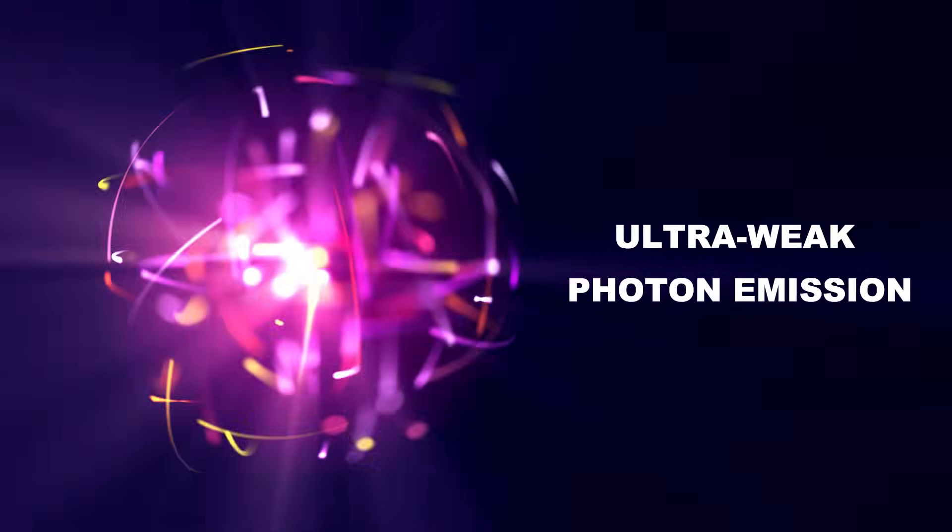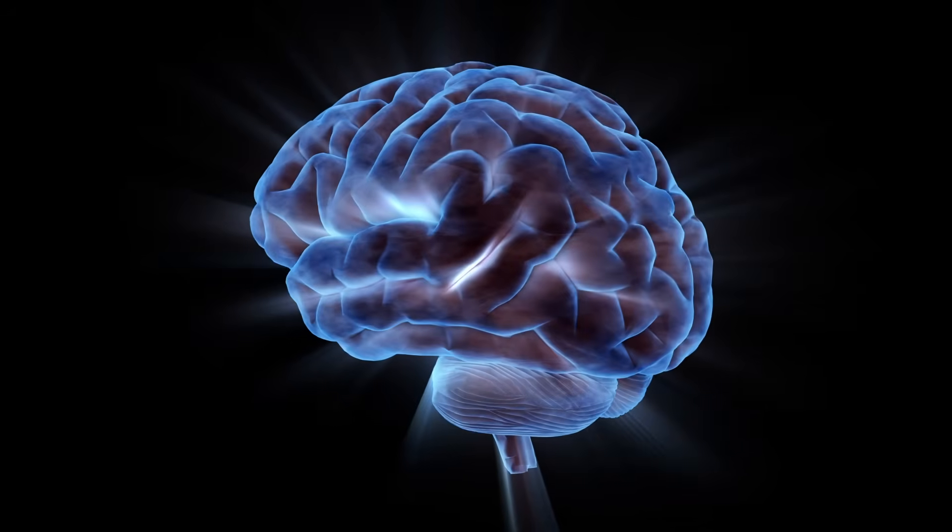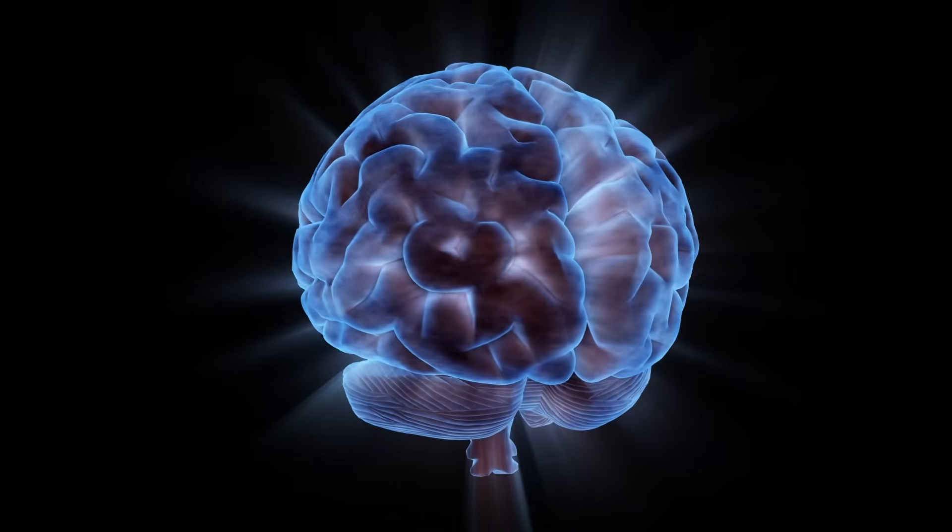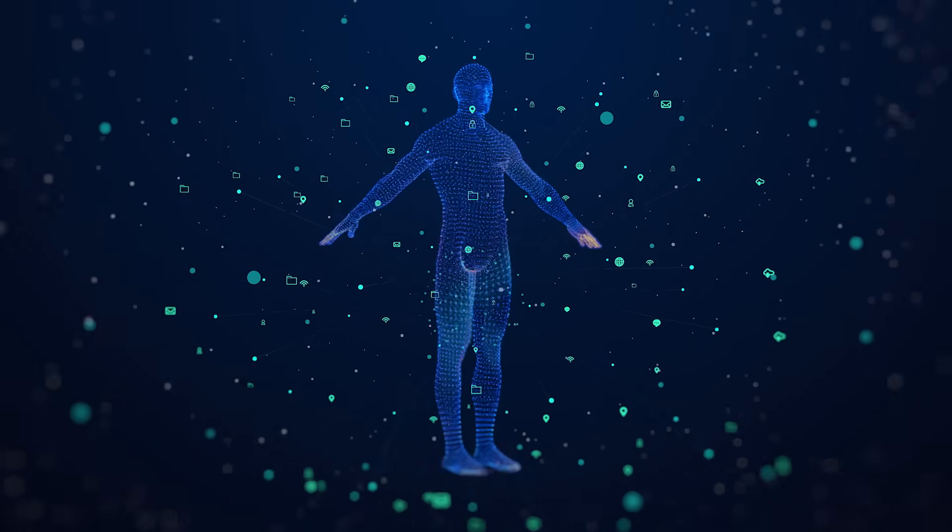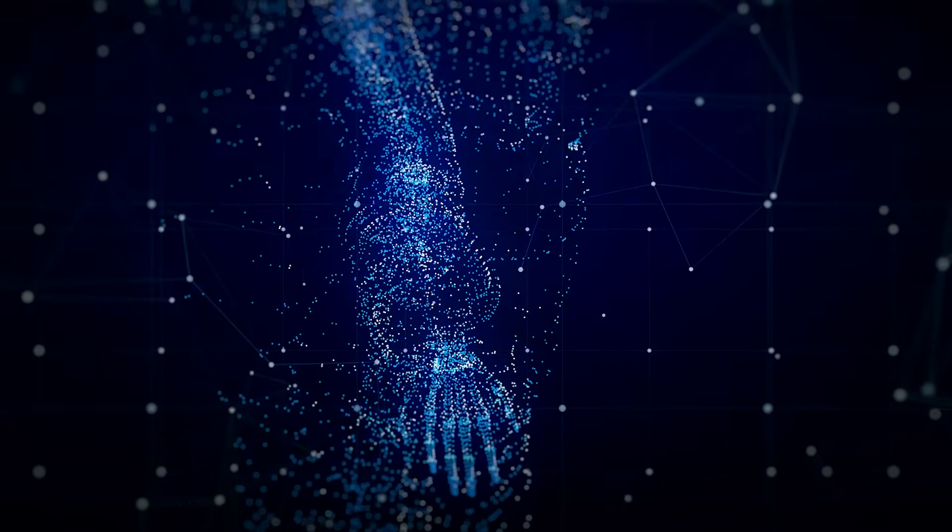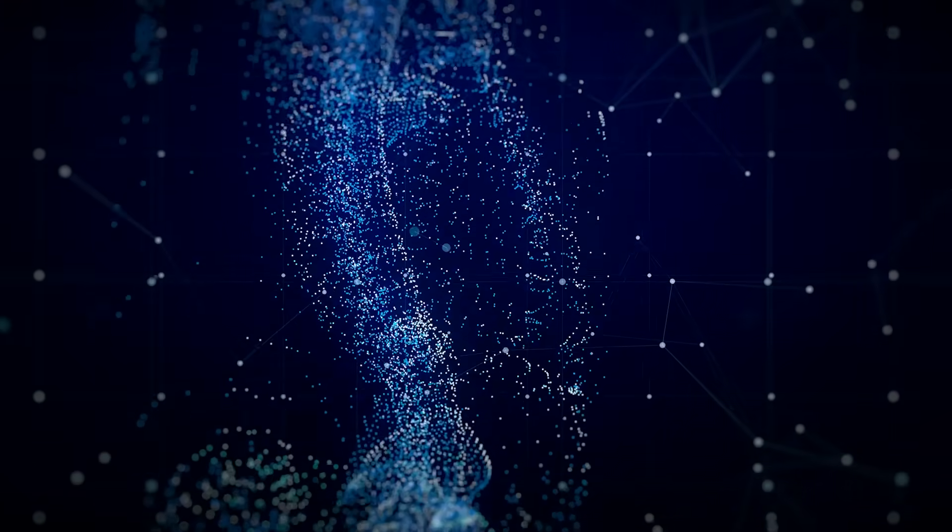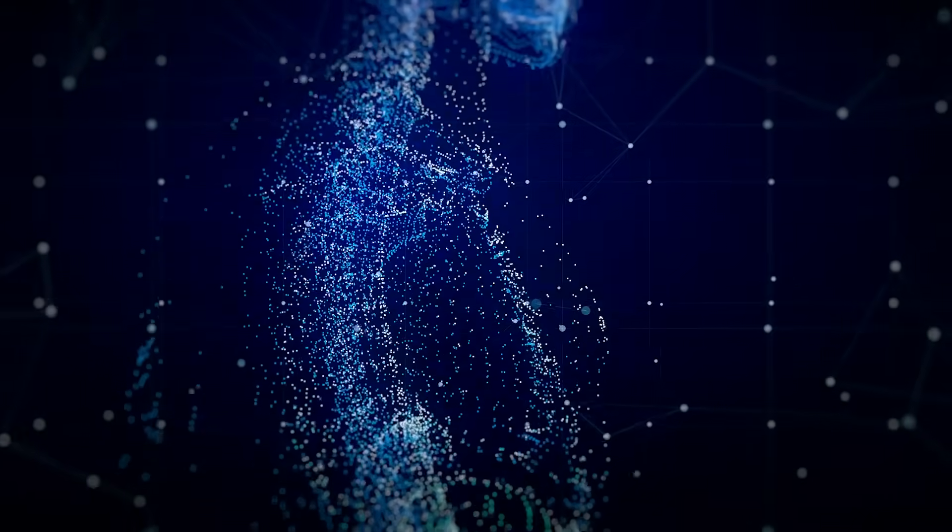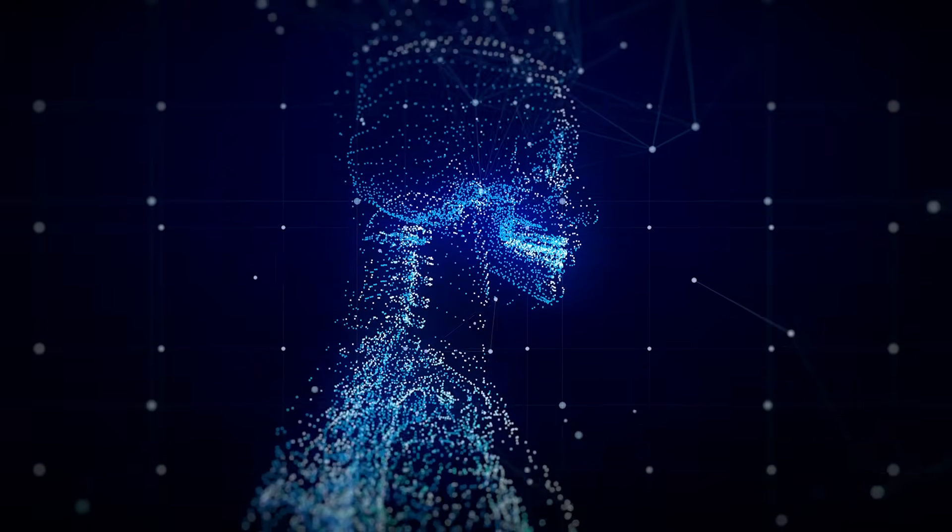This isn't science fiction, it's a real phenomenon called ultra-weak photon emission, or UPE, and it's happening in your body right now. Every single cell in your body, from your brain neurons to your skin cells, is constantly producing tiny amounts of light in a process that's completely invisible to the naked eye. We're talking about an emission so faint that it's about a thousand times weaker than what your eyes can detect. Yet, this ghostly glow has become one of the most fascinating frontiers in modern biology.